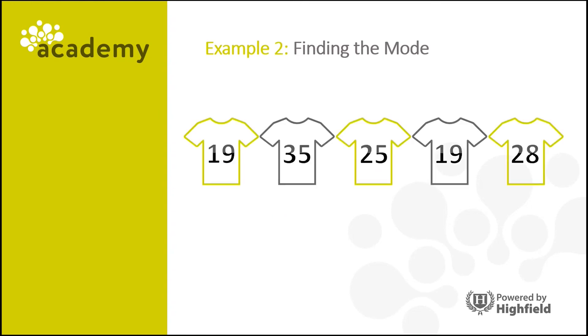Here's another example. So we have a series of shirts with different numbers on them, and the 19 appears the most out of all of the values. Therefore, the mode is 19.